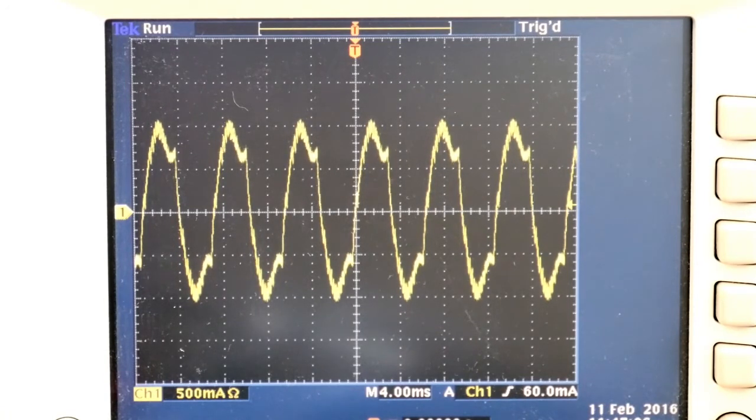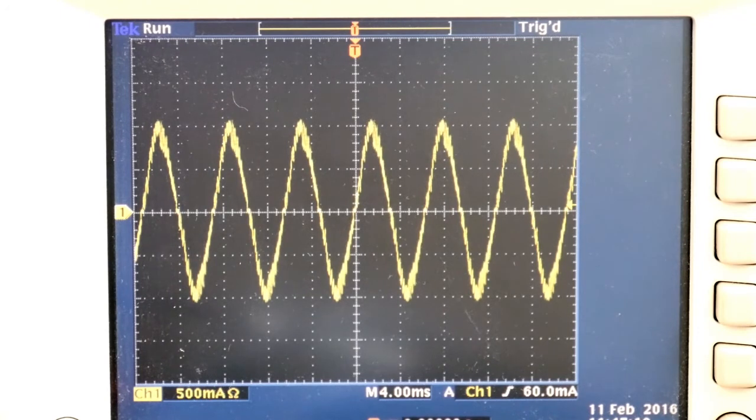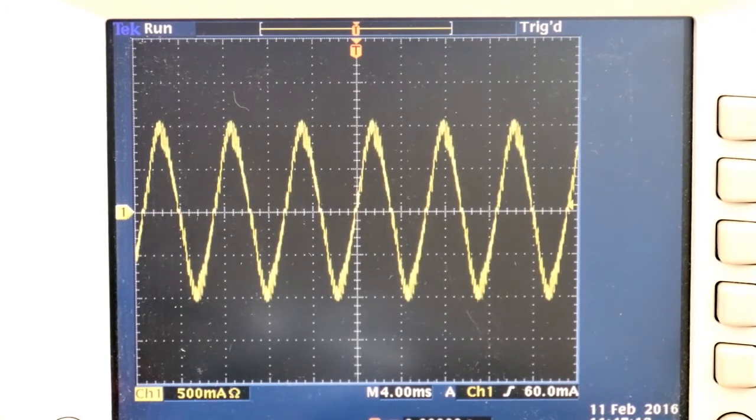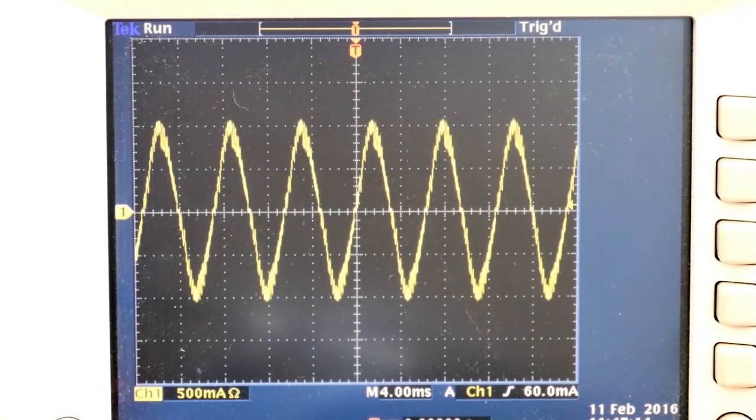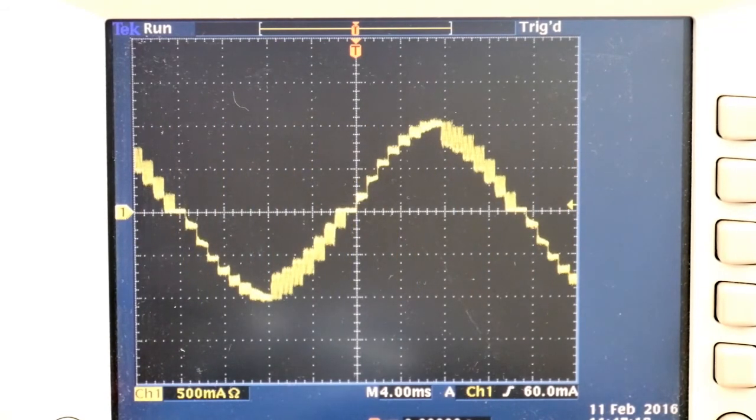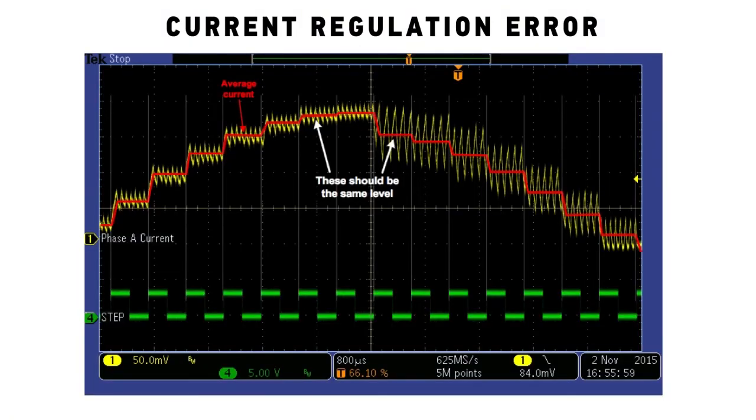If we optimize the decay setting at this higher speed and then go back to the lower speed, we see lots of current ripple. The problem with large current ripple is that it results in errors in the average current level, which causes positioning errors as well as noise and vibration.